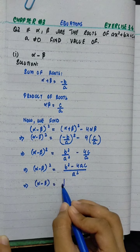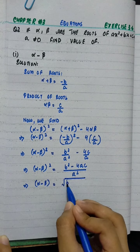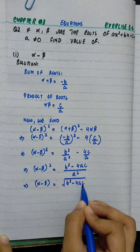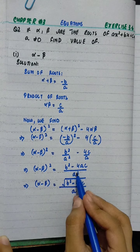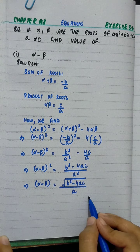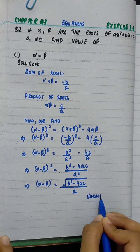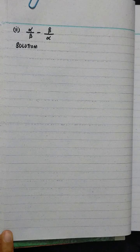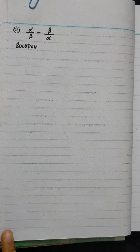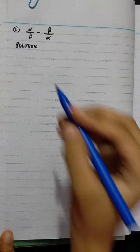Alpha minus beta equals under root of b squared minus 4ac, divided by a. This square cancels with the square root. Now part 2 is alpha over beta minus beta over alpha.